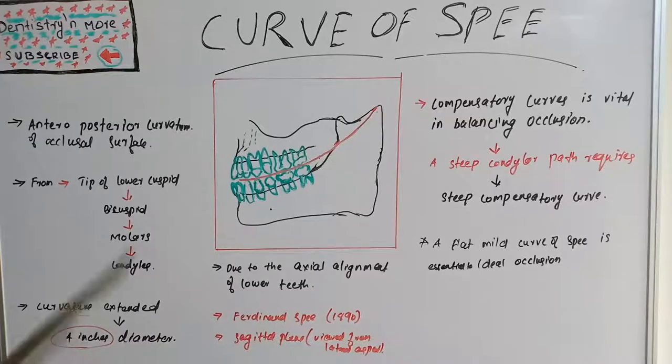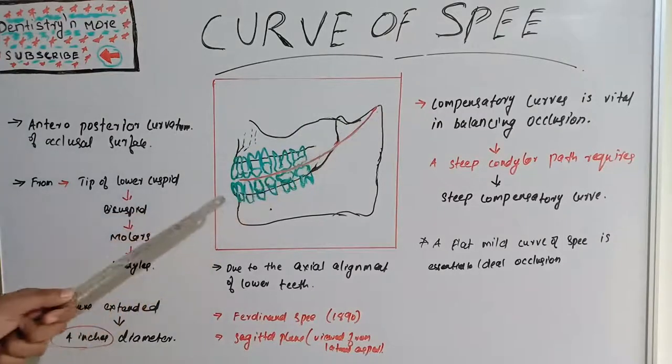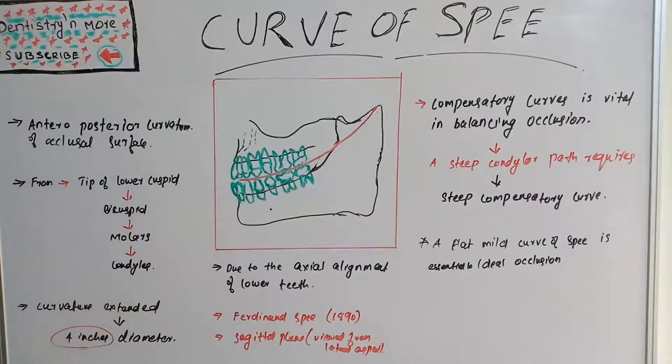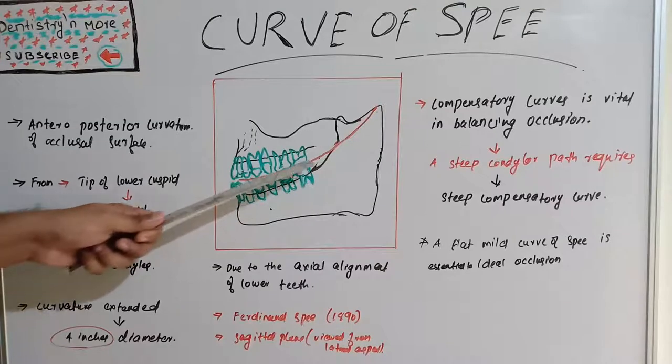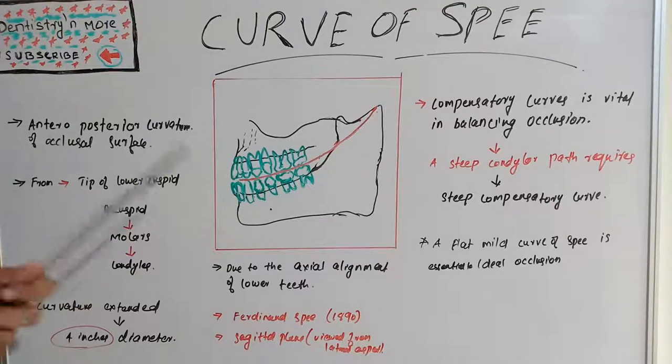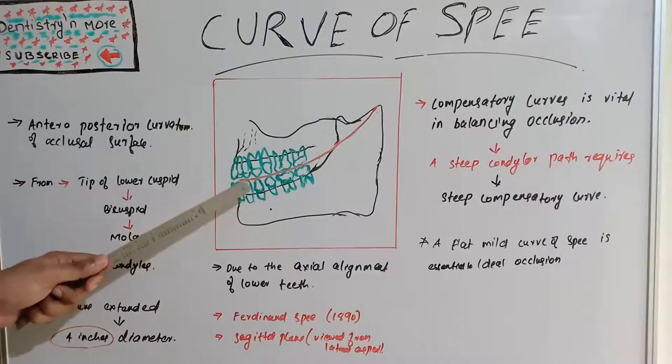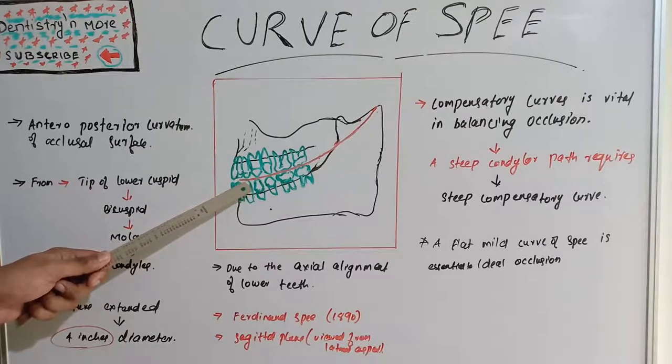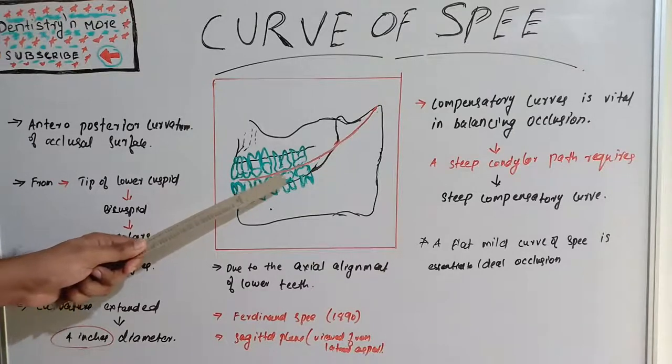Curve of Spee is this red line. It is an anatomical curve established by the occlusal alignment of the teeth, projected onto the median plane beginning with the cusp tip of mandibular canine and following the buccal cusp tips of premolars and molars.